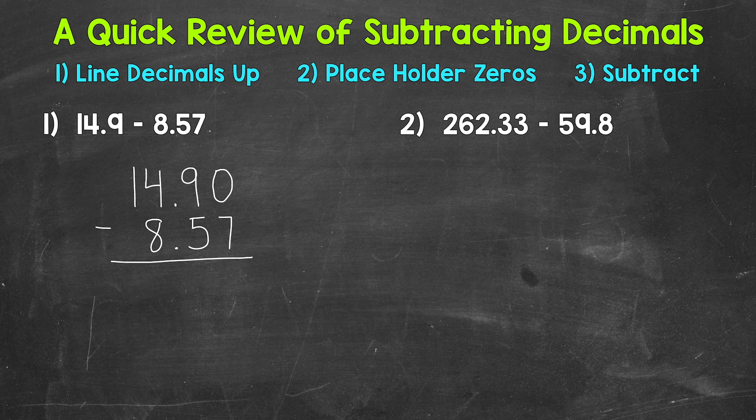Now we're able to subtract. So we'll start with the hundredths place. We have 0 minus 7, which we need to borrow. So let's borrow from the 9. That's an 8 now. And we have 10 minus 7, which is 3. Then we move to the tenths place, 8 minus 5, 3. Bring our decimals straight down into the answer. The decimal is lined up throughout the entire problem.